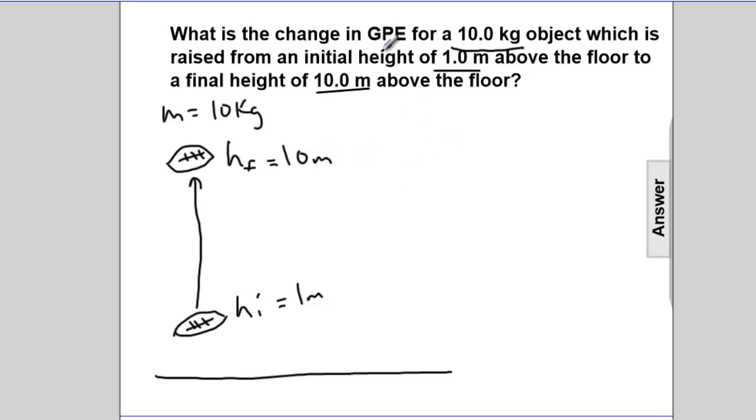So what is the change in gravitational potential energy? So the change in, we'll put a delta symbol, change in GPE, is equal to its mass, which is known, times gravity, which is known, times the change in height.